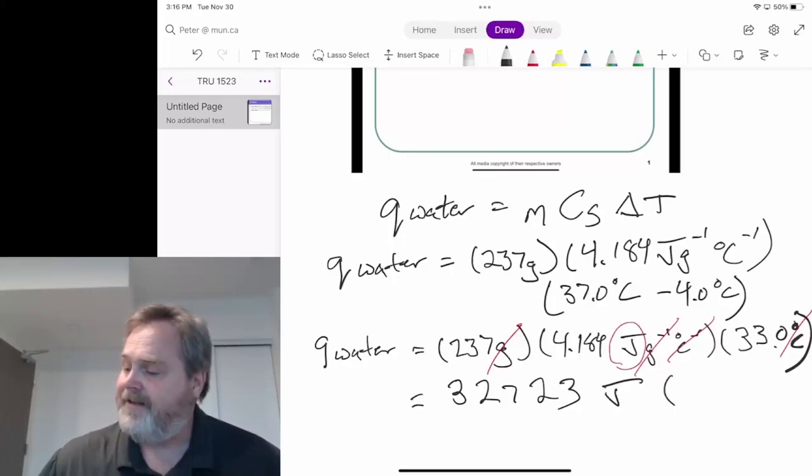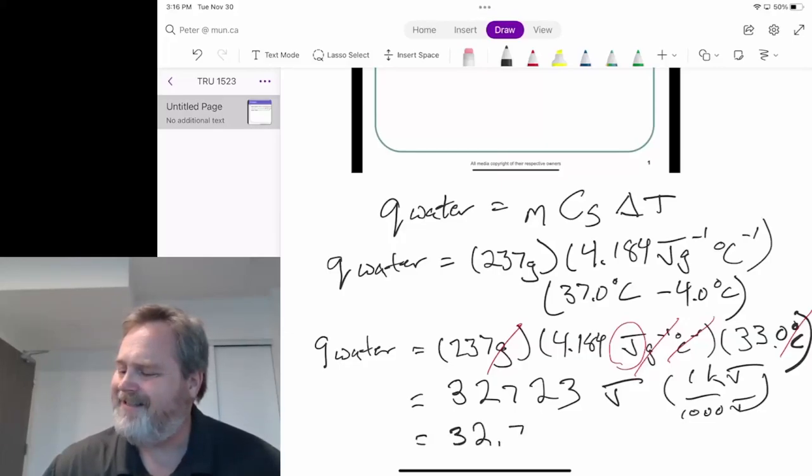Now I can take that and say, well, there's one kilojoule per 1000 joules. And effectively, what that's going to give me is 32.7 kilojoules. Again, this joules will cancel out that one, leaving us there.